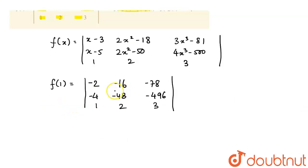This is going to be 1 minus 5, that is minus 4. 2 minus 50, that is minus 48. 4x cube, so 4 minus 500, that becomes minus 496. And this remains 1, 2, 3.